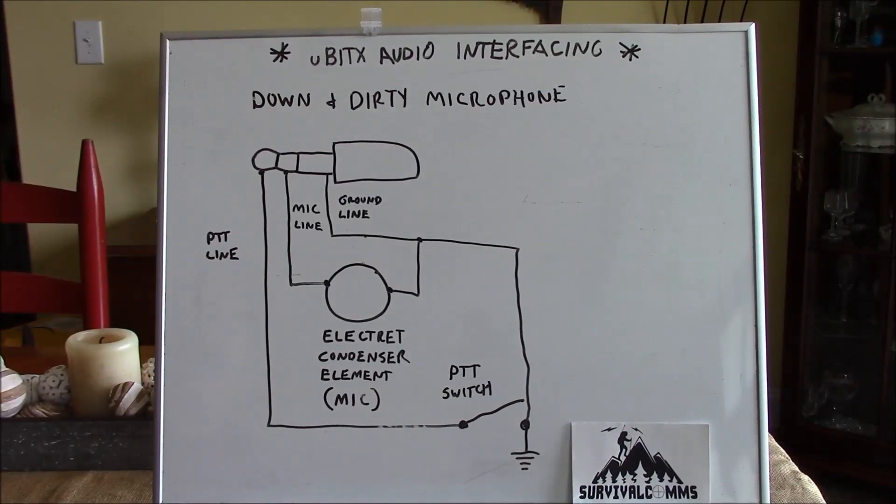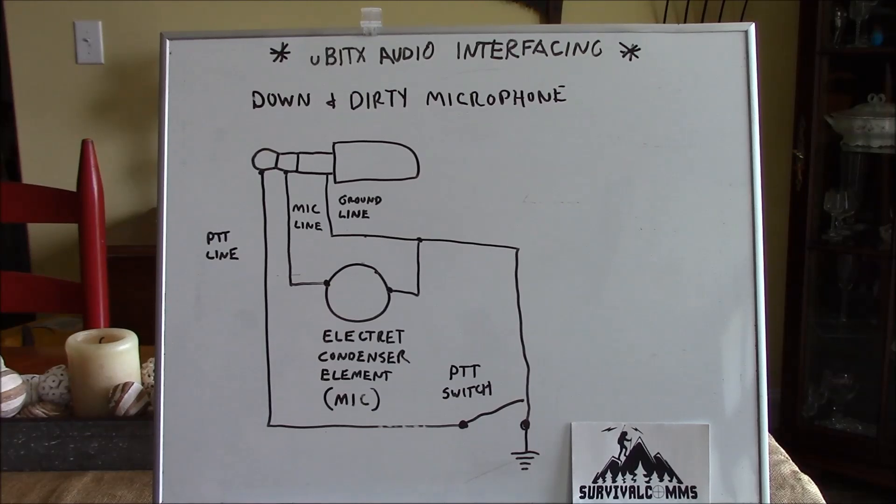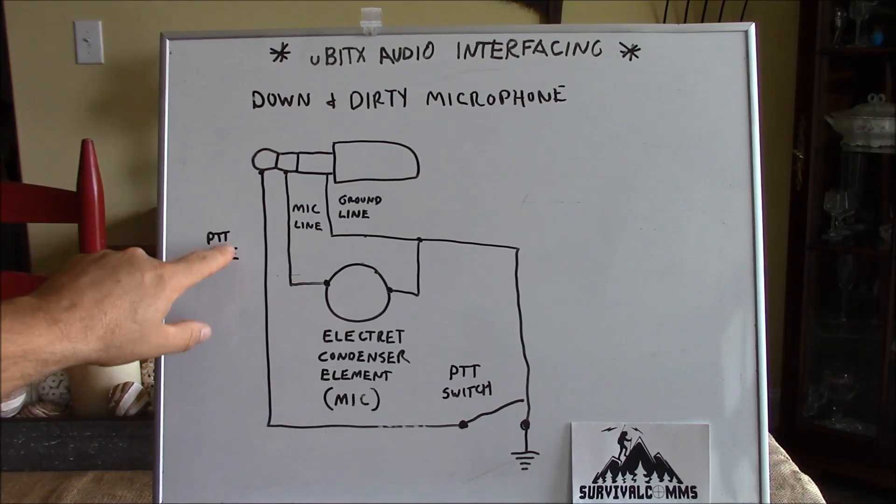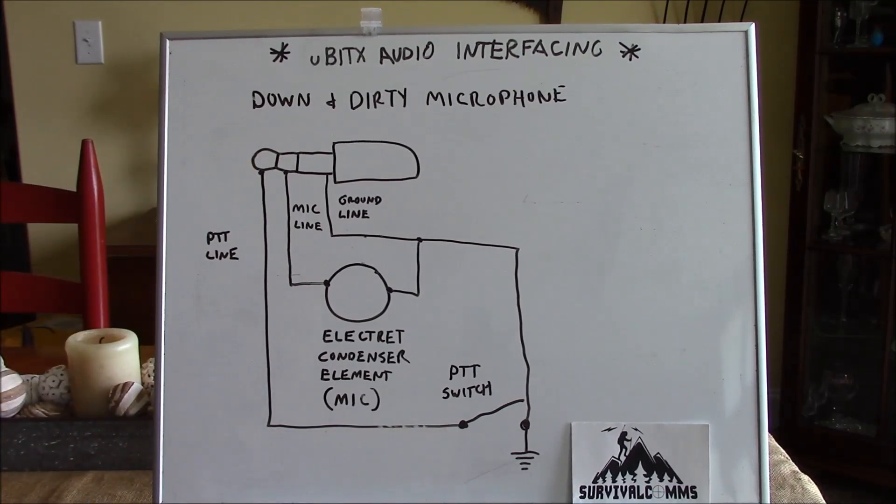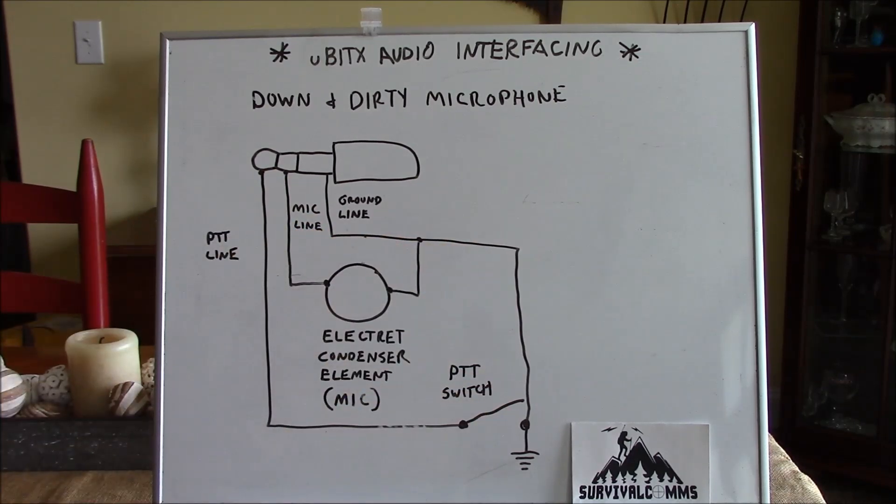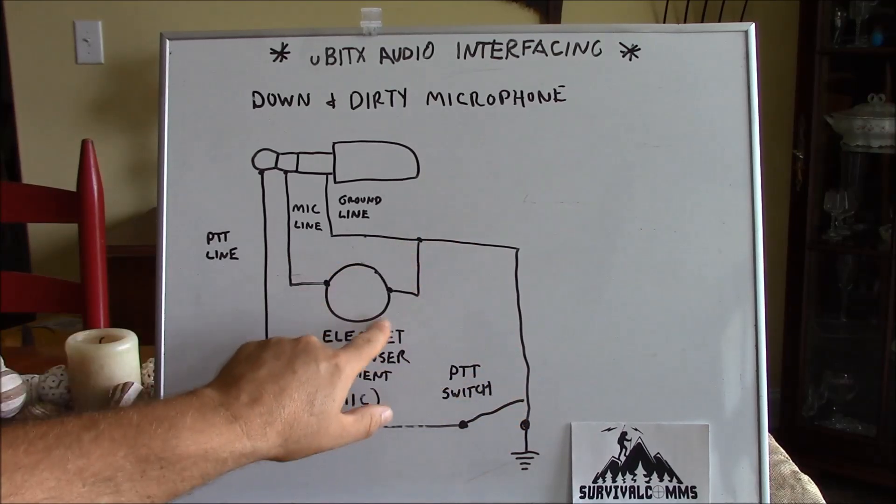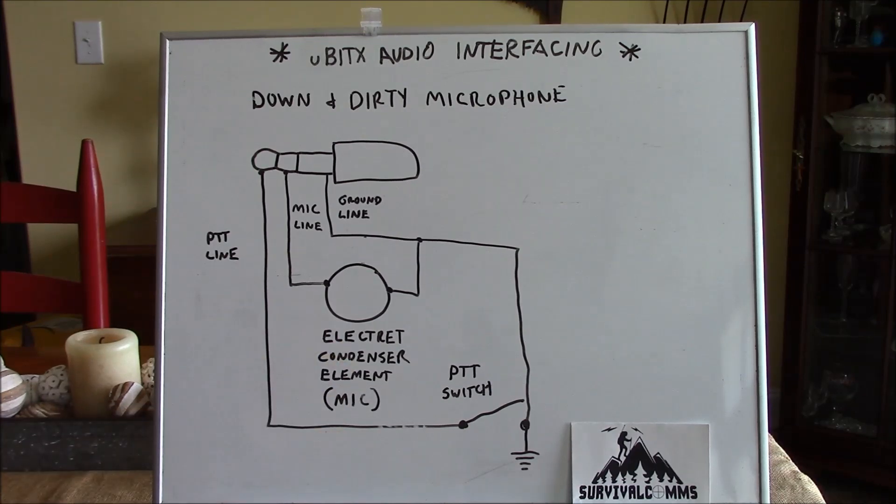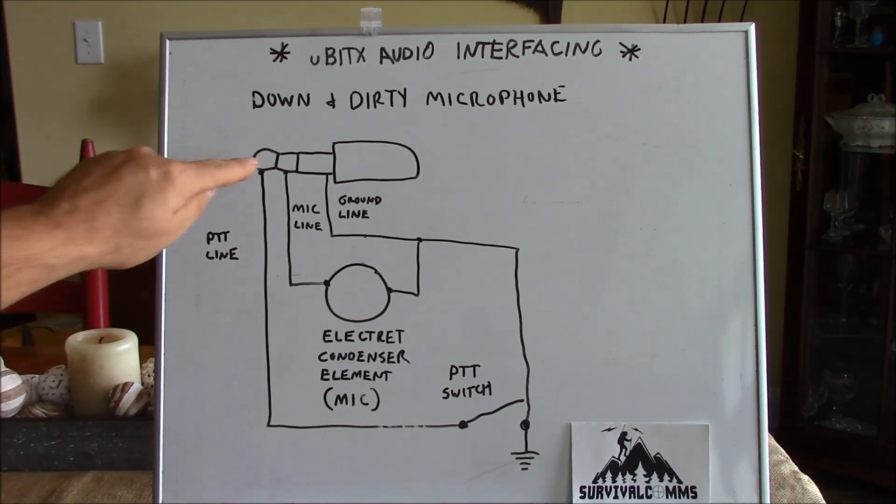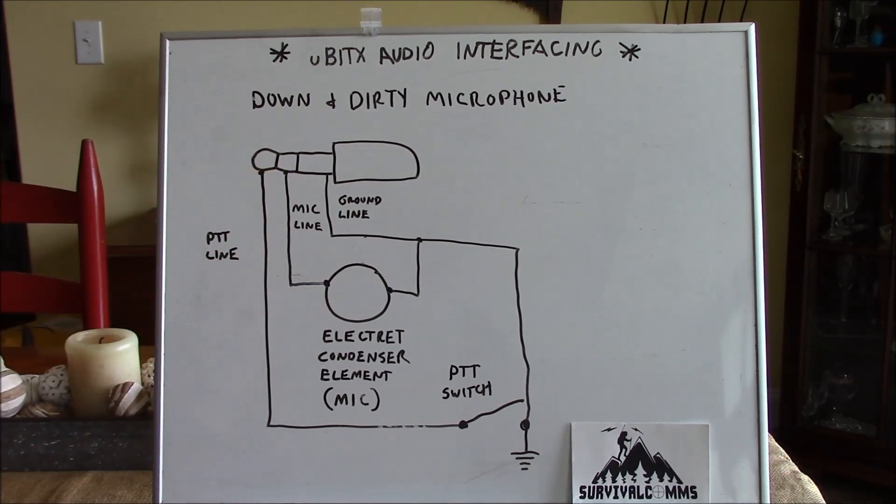Here's our down and dirty microphone schematic. We have our 3.5mm stereo connector up here. And we have our push to talk line going off of the tip and it goes to one side of our microswitch. The other side of our microswitch is tied to ground. And then from that one terminal of that microswitch, I've run a second lead back up to the ground side of the microphone element. The mic line comes off of the ring and runs to the other side of the element.